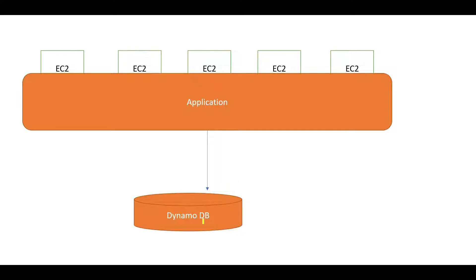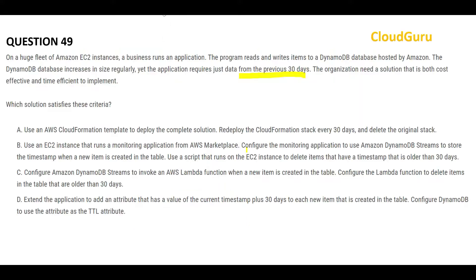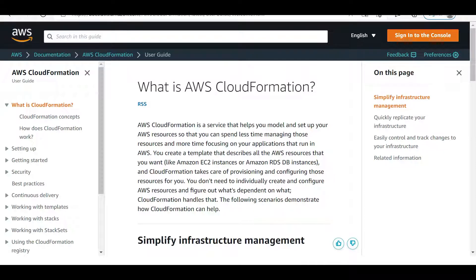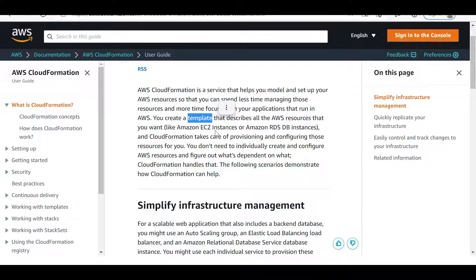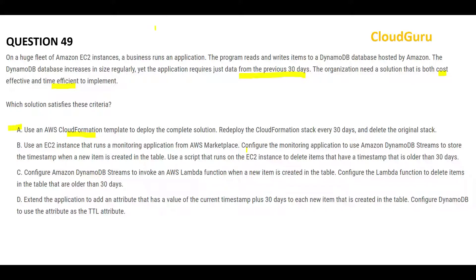Now let's jump into some new questions. You have an application which runs on many EC2 instances and the data is stored in DynamoDB. This database is elastic — it can increase its size — but the requirement is to store data for only the last 30 days. What is required as a cost-effective and time-efficient solution? The first option tells you to make use of CloudFormation, which is infrastructure as code — you can create templates to create AWS resources. It would be a bad solution to wipe out the infrastructure and recreate it.